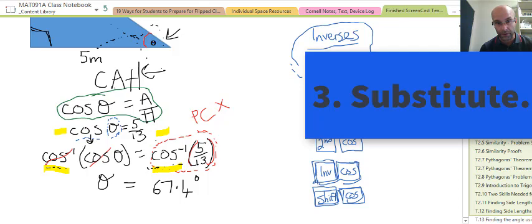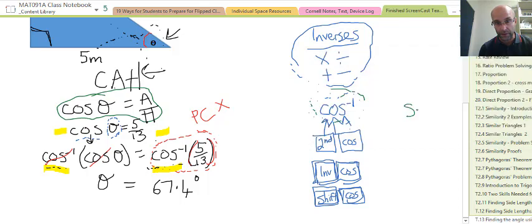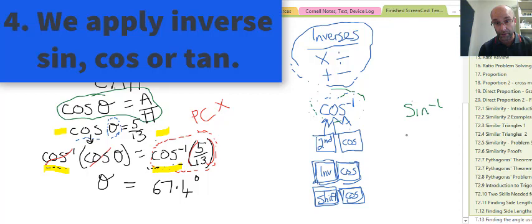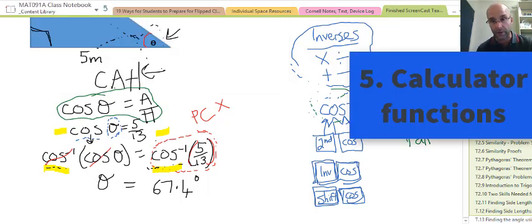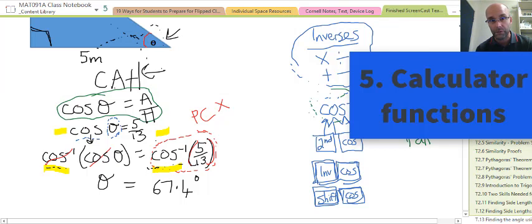The new thing is we have to find inverse cos, or inverse sine, or inverse tan. Then we have to undo both sides with the inverse. Remember your calculator keys and we get our answer.